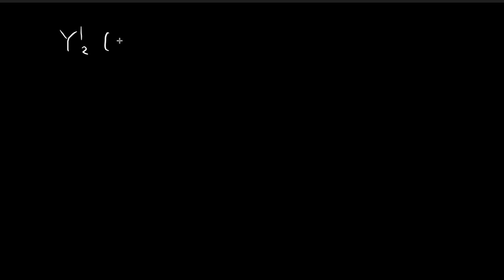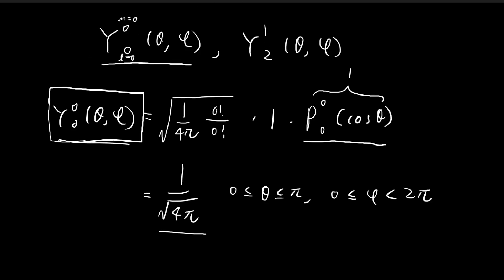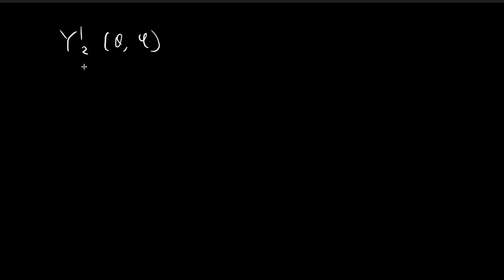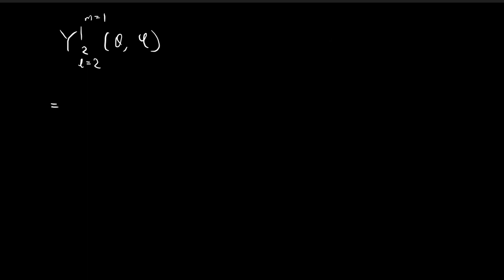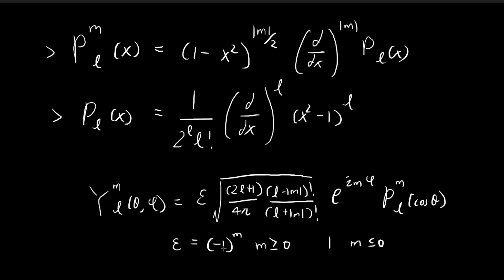Now let's do something similar for Y₁²(θ, φ). This time, l is equal to 2 and m is equal to 1, so things are going to be more interesting. We start off with the same formula. First, epsilon = (-1)^1 because m is greater than 0, so epsilon is equal to -1.